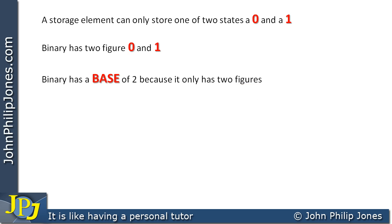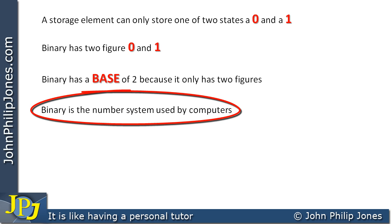Our number system, denary, the one we're used to, is said to have a base of ten because it has ten figures, but binary has a base of two because it only has two figures, zero and one. Now, binary is the number system used by computers.